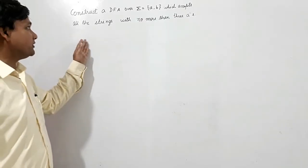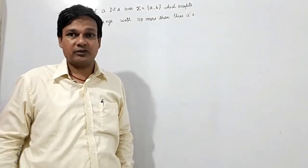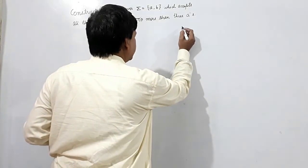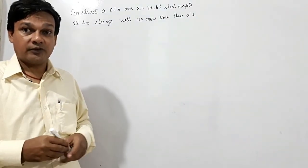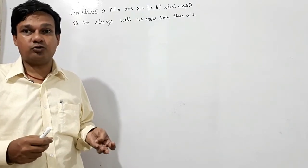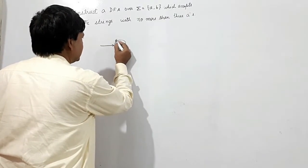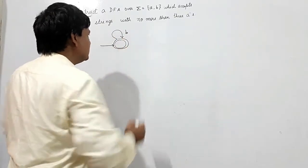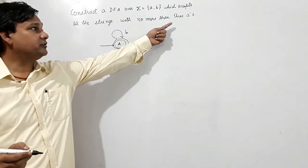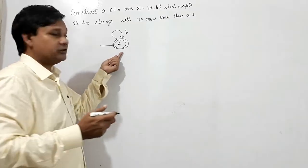Here we have to construct a DFA which accepts all strings over {A, B} with no more than three A's — that means at most three A's. Zero A may be there, one A, two A, or three A. If there is zero A, the initial state should also be the final state. If I get B it should be accepted because there is no A and we allow no more than three A's — meaning less than or equal to three A's.